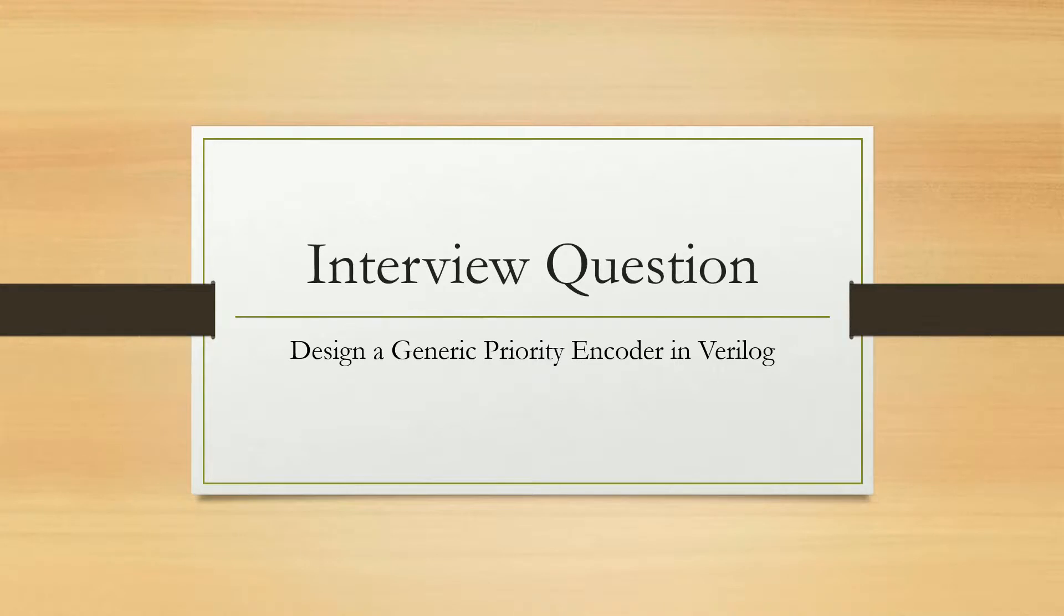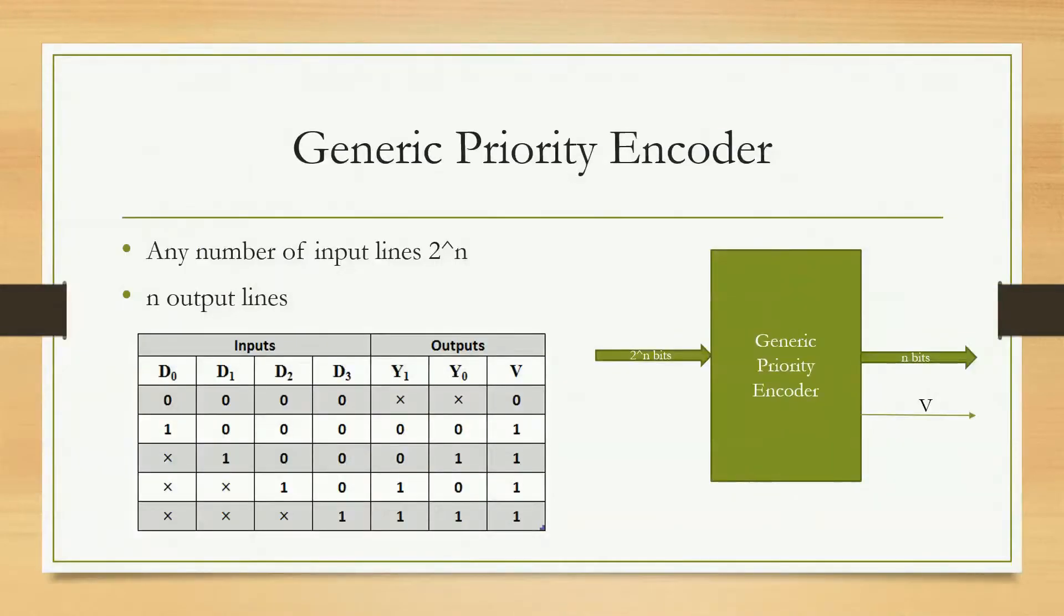Let us see what is generic priority encoder. In a generic priority encoder it will always have 2 raised to power n bits. That means the input of a generic priority encoder will always be a multiple of two: it can be 2, 4, 8, 16, 32 and so on. According to the input we will have n bit output along with the valid signal.